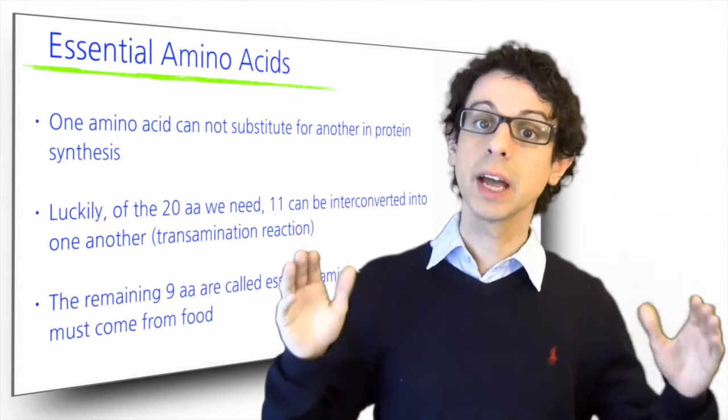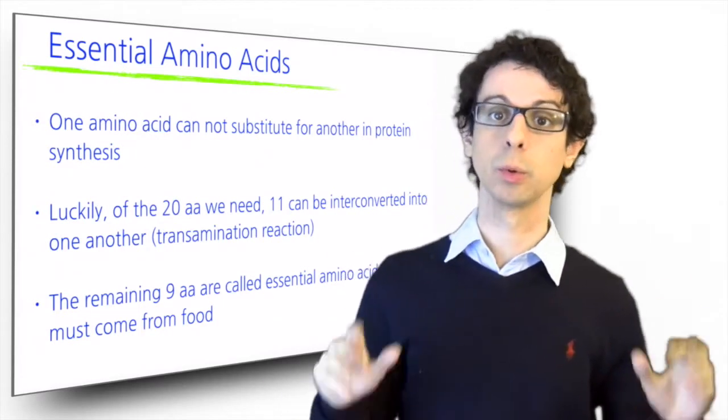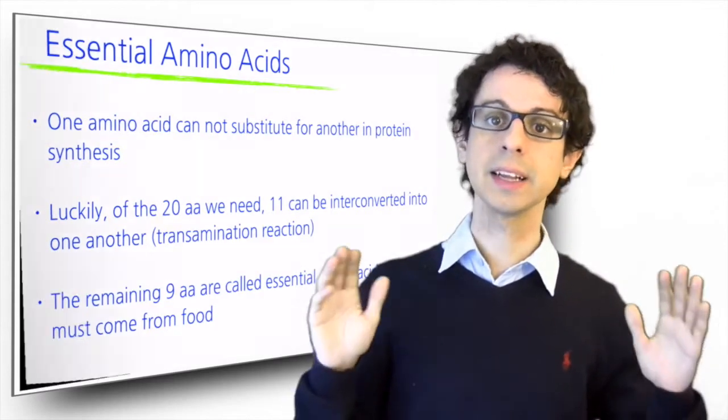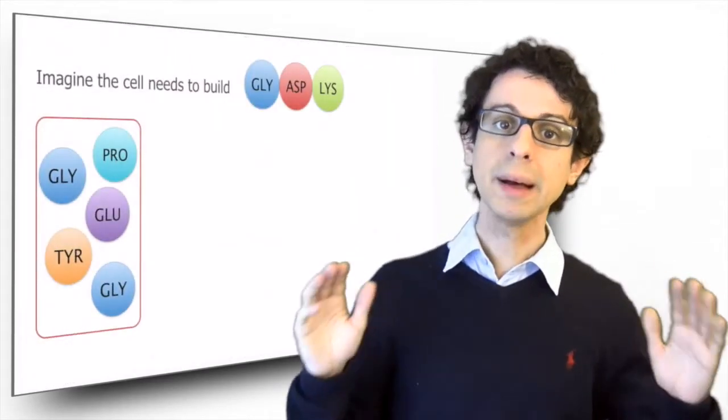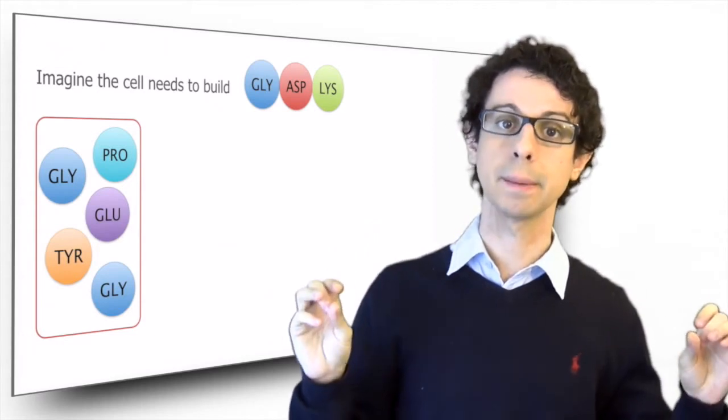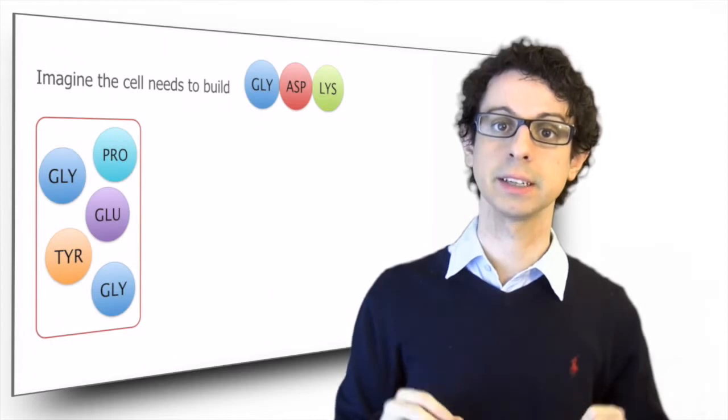And we need to get all of them, because if we miss even just one, then we will be in trouble when we need it to build a protein. To illustrate this concept, let's make a real example. Imagine the cell needs to build this imaginary simple protein, a tripeptide made of just three amino acids: glycine, aspartate, and lysine.